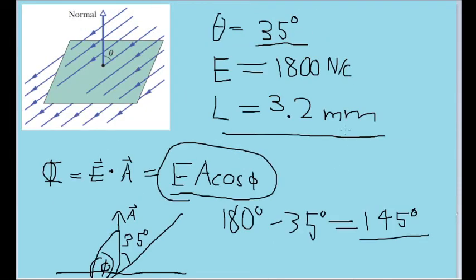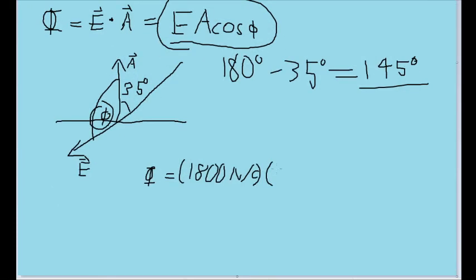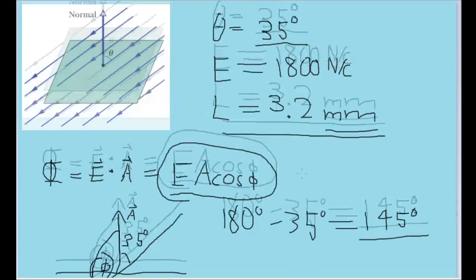We're given this in millimeters, but I want to write it in meters instead. So, I'll write it as 3.2. And normally, instead of 3.2 millimeters, I'll write it as 3.2 times 10 to the negative third.